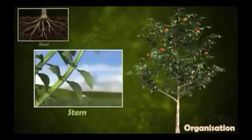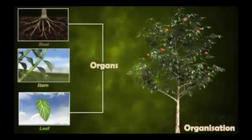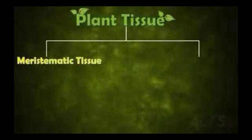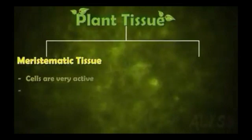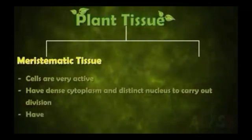Organs like root, stem, and leaf are made up of several such tissues. In today's lesson we will discuss about plant tissues. Plant tissues are generally divided into meristematic tissue, which contains cells that are very active with a dense cytoplasm and a distinct nucleus which helps in cell division.